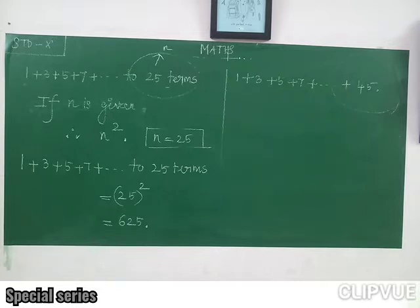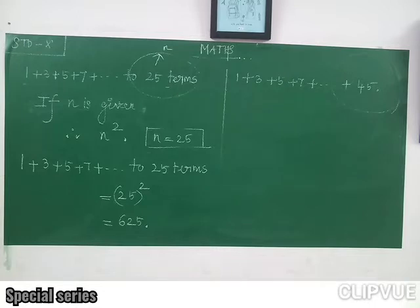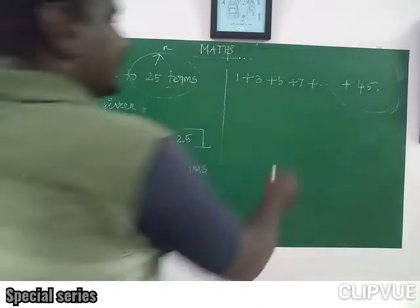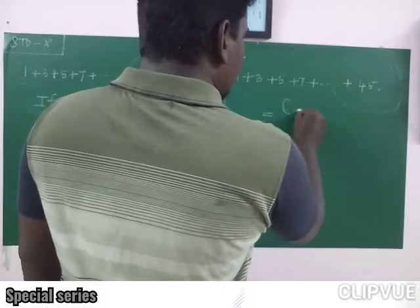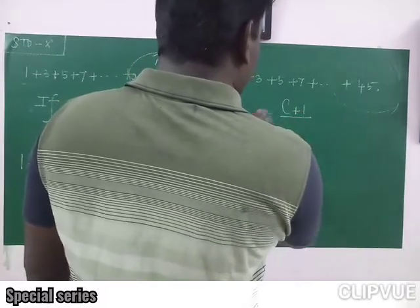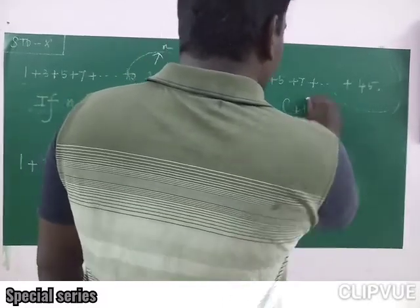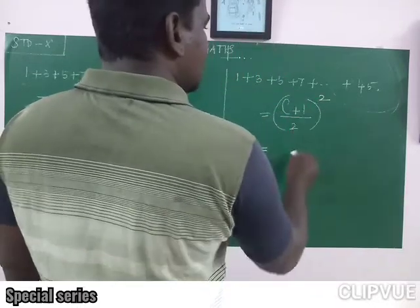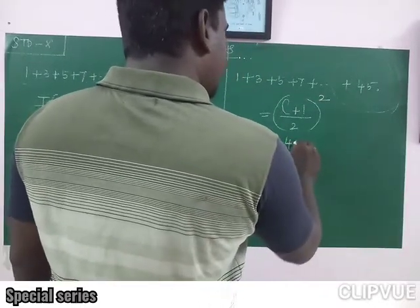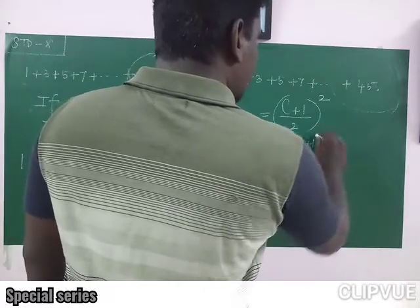If the last term is given, what is the formula? The first case: if n terms is given and n is given, the formula is n square, for odd number of terms. If the last term is given, the formula is (l plus 1) divided by 2, the whole square. So applying it: l is 45, so 45 plus 1 by 2, the whole square — that is 46 by 2, the whole square.